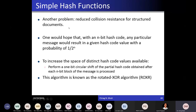Perform a one-bit circular shift of the partial hash code obtained after each M-bit block of the message is processed. This algorithm is known as the rotated XOR algorithm. But it is still poor. An adversary knowing message M1 and its hash H1 — since these are transmitted — can replace M1 with M2, which has a different hash H2, then append blocks of M1 at the end of M2 to force the hash value of the composite to be H1.